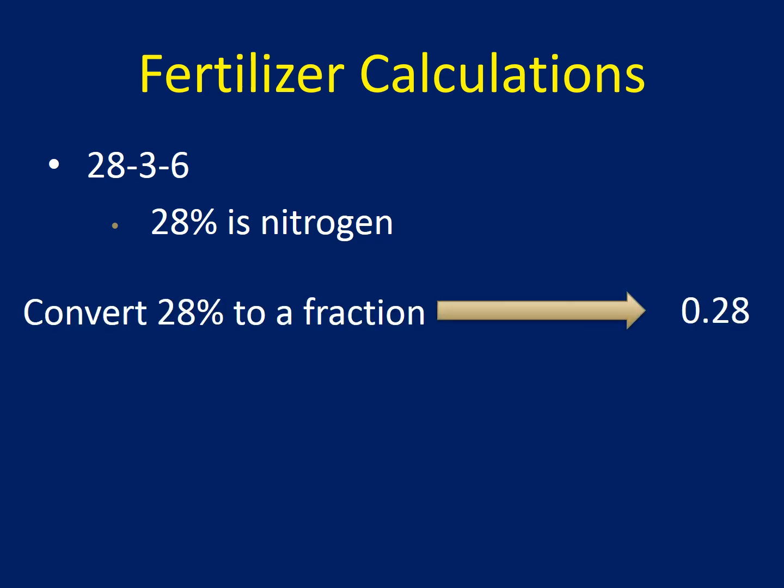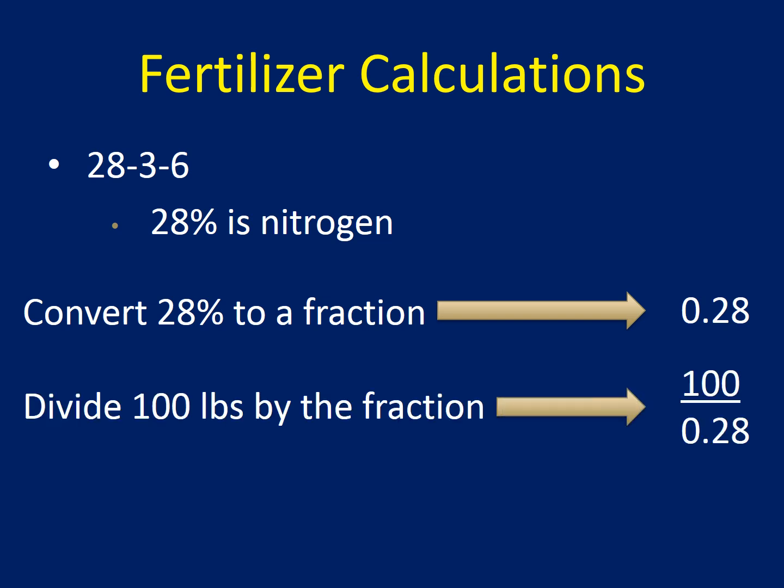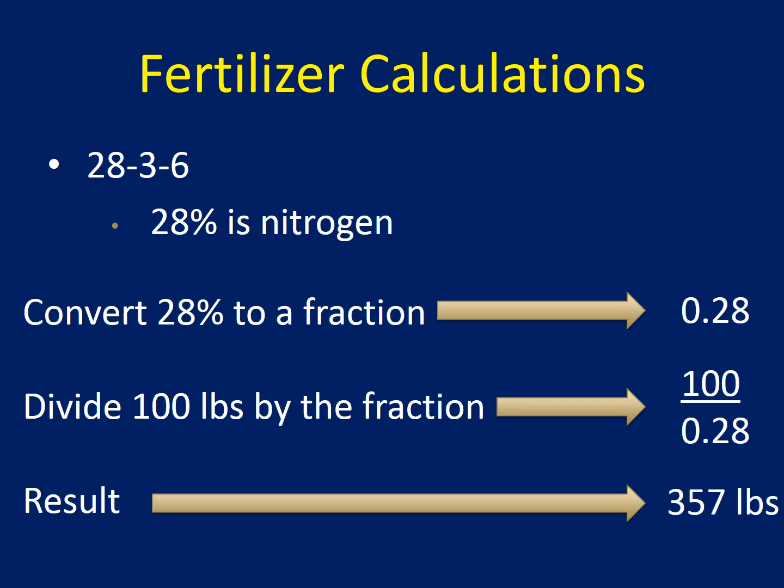The first step is to take that 28% and convert it to a fraction — so we've got 0.28 — and then we're going to take that hundred pounds that we need and divide it by the fraction. So 100 divided by 0.28, and we end up with 357 pounds. That means we need to apply 357 pounds of that particular product to get our hundred pounds of nitrogen.